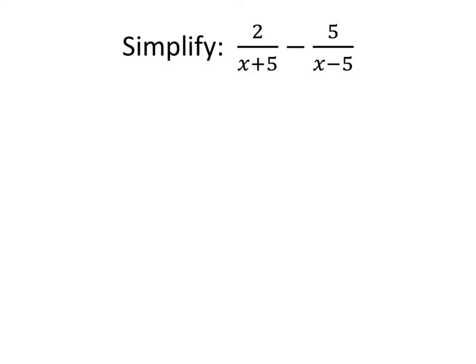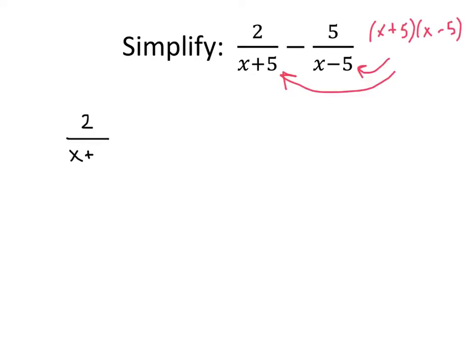We can do the same thing when our fractions have variables in them. Once again, we have a different denominator in the first fraction, x plus 5, and a different denominator in the second fraction, x minus 5. When we've got algebraic expressions, we don't necessarily have to find the least common multiple. An easy way to find a common multiple is to simply multiply these two expressions together: x plus 5 times x minus 5. That will give us a common denominator. So to make 2 over (x plus 5) have that common denominator, we multiply top and bottom by (x minus 5). On the bottom, we get (x plus 5) times (x minus 5), and we'll just leave that factored.